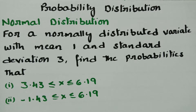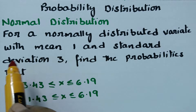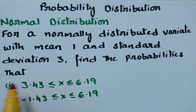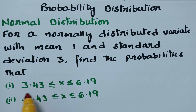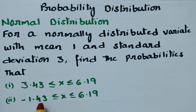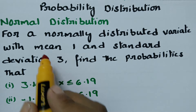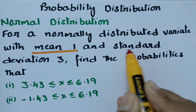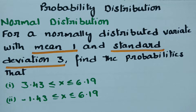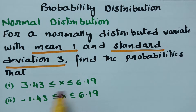This problem is on normal distribution. For a normally distributed variate with mean 1 and standard deviation 3, we have to find the probabilities for: (1) 3.43 ≤ x ≤ 6.19, and (2) -1.43 ≤ x ≤ 6.19. The mean value is given as 1 and standard deviation is 3, and we have to find the probabilities between these values.